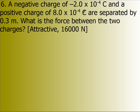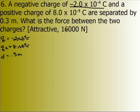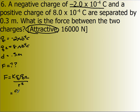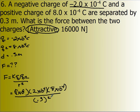I have a negative charge of 2 times 10 to the negative 4 Coulombs — that's Q1 — and a positive charge of 8 times 10 to the negative 4 Coulombs, separated by a distance D of 0.3 meters. Since one is positive and one is negative, we know it's got to be attractive because opposites attract. The force is K Q1 Q2 divided by R squared: 9 times 10 to the 9th times 2 times 10 to the negative 4 times 8 times 10 to the negative 4, divided by 0.3 meters squared. When you plug this in you get 16,000 newtons.